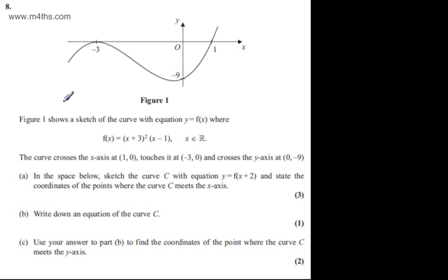In question 8, we're told Figure 1 shows a sketch of the curve with equation y equals f(x), where f(x) equals (x + 3)² multiplied by (x - 1), where x is a real number. The curve crosses the x-axis at (1, 0), touches it at (-3, 0), and crosses the y-axis at (0, -9).